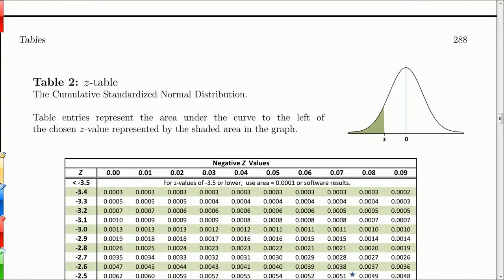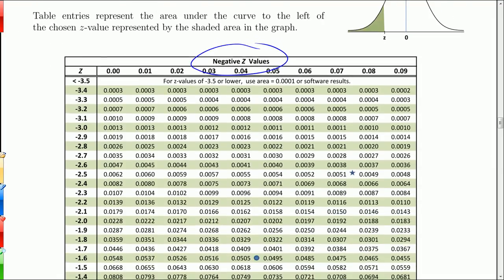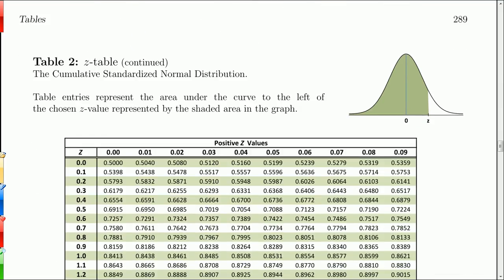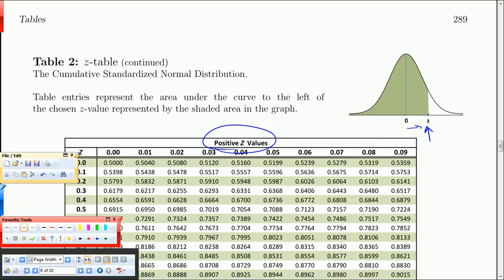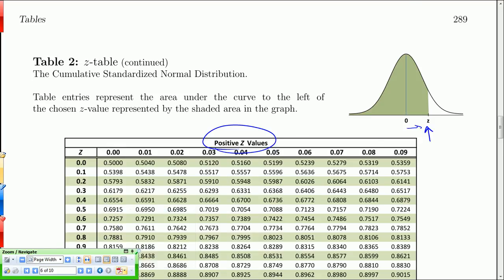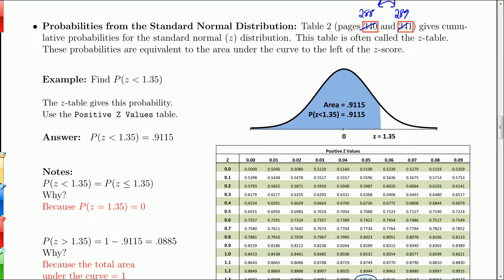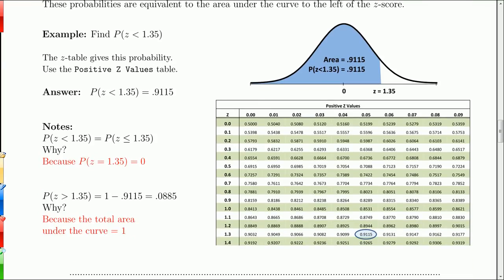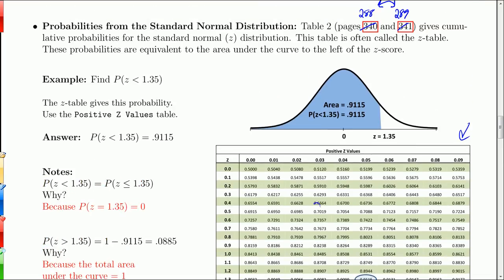We have two tables — one for negative z-values and one for positive z-values on page 289, where z is to the right of the mean. We'll be dealing with this table pretty consistently for the rest of the book. The probabilities in the table — all these numbers — represent probabilities, which also represent areas under the curve. I'll try to shade the area which depicts the probability I'm seeking.